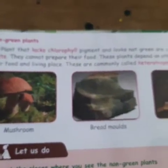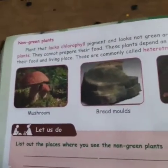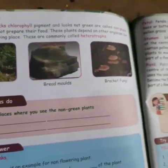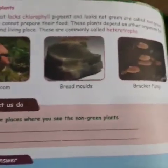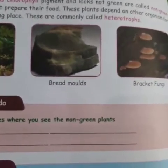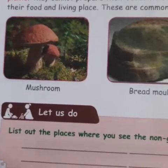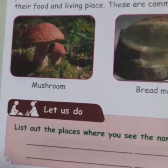Next, non-green plants. Plants that lack chlorophyll pigment and look not green are called non-green plants. They cannot prepare their own food. These plants depend on other organisms for their food and living place. These are commonly called heterotrophs.